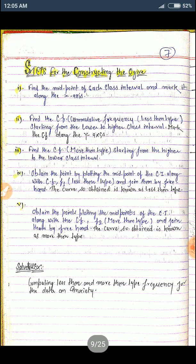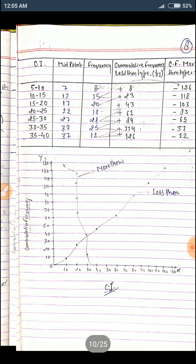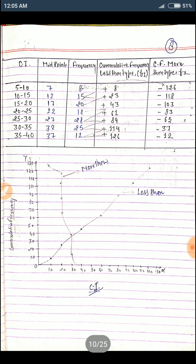Steps for construction of the ogive: you can see here. First of all, you draw y-axis and x-axis, and find out the cumulative frequency, then less than type F1 and more than type F2. Okay. And this is the example.